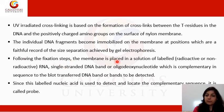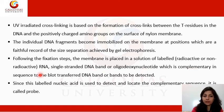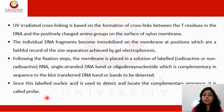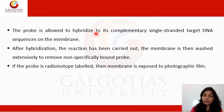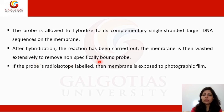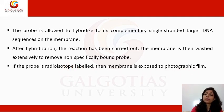Following the fixation step, the membrane is placed in a solution of labeled — radioactive or non-radioactive — RNA, single-stranded DNA, or oligodeoxynucleotide that is complementary in sequence to the blot-transferred DNA band to be detected. This labeled nucleic acid used to detect and locate the complementary sequence is called a probe. The probe is allowed to hybridize to its complementary single-stranded target DNA sequence on the membrane. After hybridization, the membrane is washed extensively to remove non-specifically bound probe. If the probe is radioisotope-labeled, the membrane is then exposed to a photographic film.